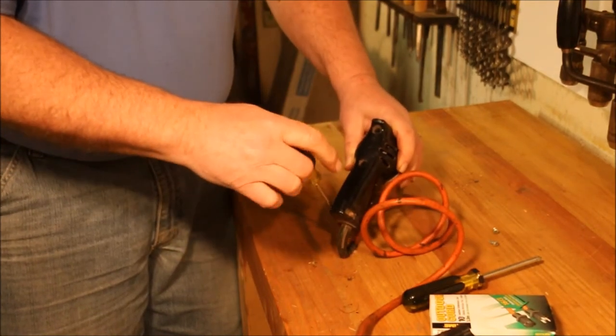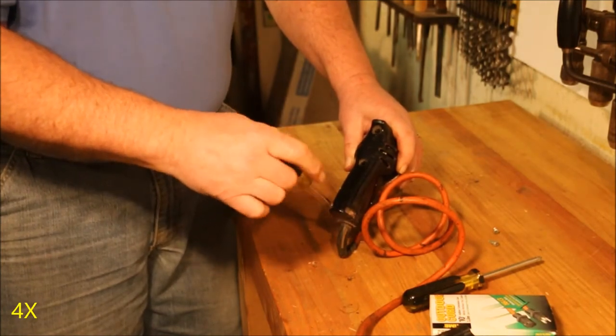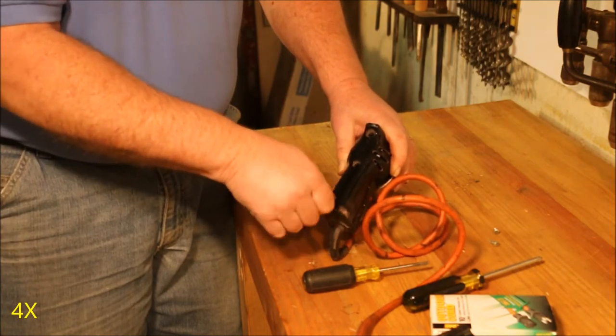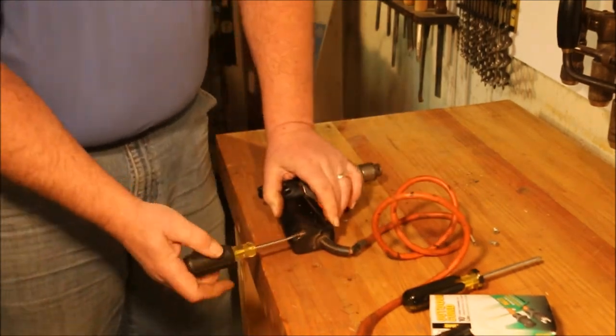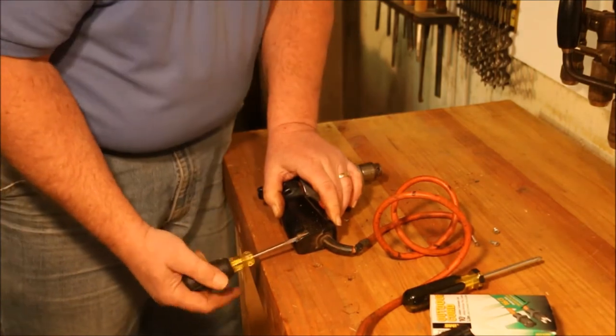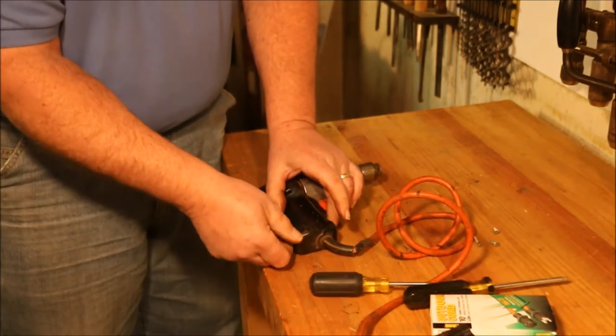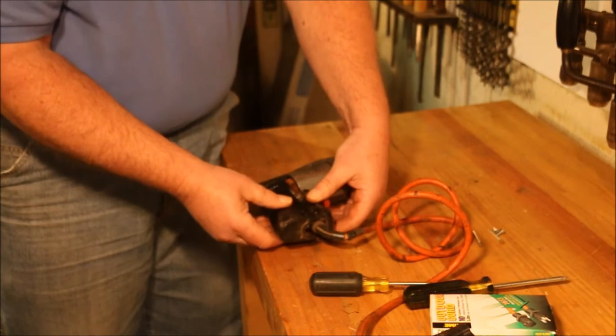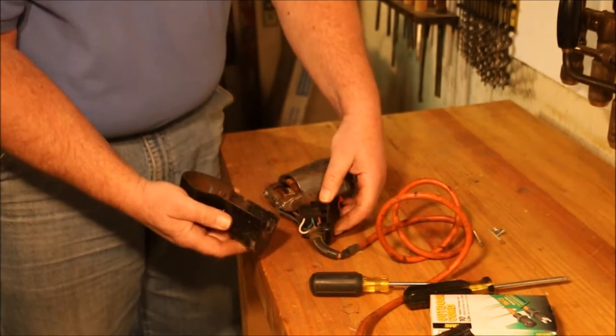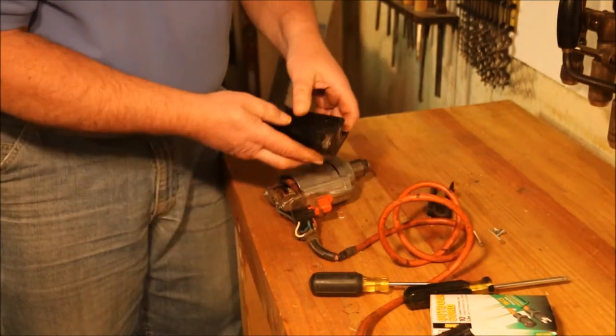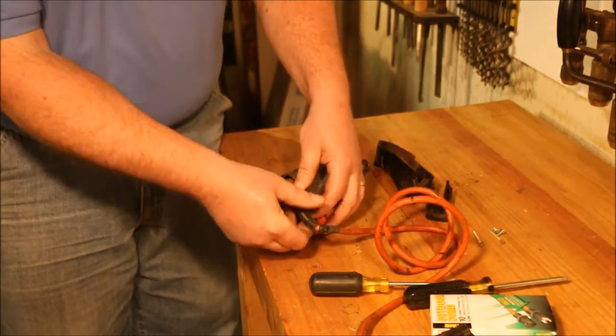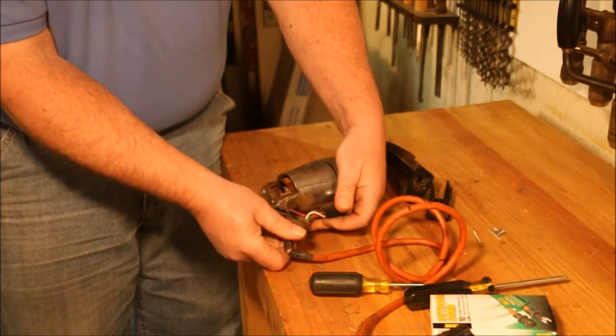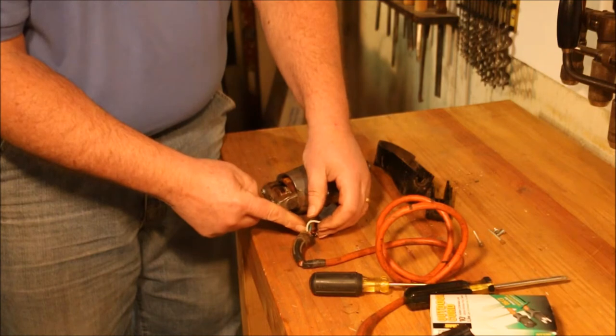That is some seriously long screw thread. Separate the two halves of the housing. There's the ground wire and the black and the white. I'm going to have to clip off the black and the white.